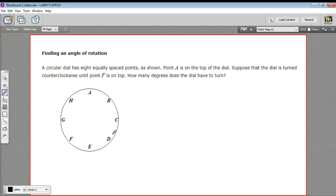So basically the circle is divided into eight parts, and the letters mark out the parts. And we're going to turn the dial counterclockwise from F until F is at the top. So we're turning it that much.